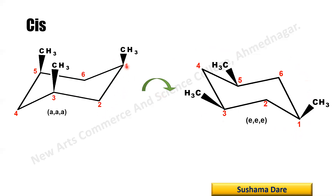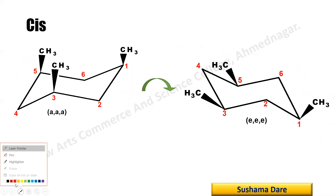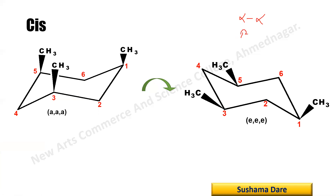Ring flipping takes place: carbon number one goes downward and carbon number four goes upward. After flipping, the axial group always changes to equatorial, but the beta orientation remains beta. Always remember: due to flipping, the orientation never changes — alpha remains alpha, beta remains beta. What changes is only the bond type: axial changes to equatorial, and equatorial changes to axial. If a bond is facing upward, after flipping it remains upward.